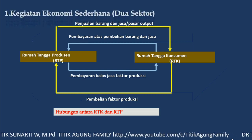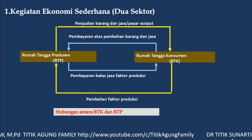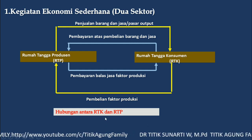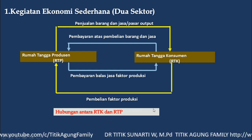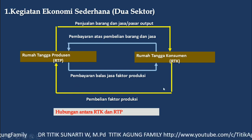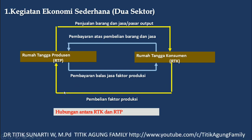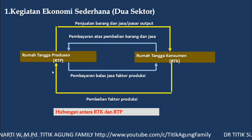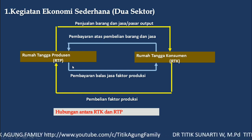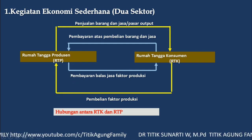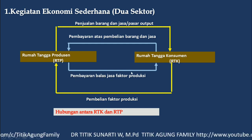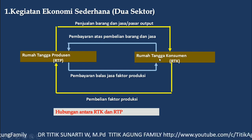Yang pertama, kegiatan ekonomi sederhana atau dua sektor, yaitu hubungan antara rumah tangga konsumen dan rumah tangga produsen. Rumah tangga konsumen menjual faktor produksi, sedangkan rumah tangga produsen membeli faktor produksi. Sebagai balas jasanya, rumah tangga produsen akan membayar kepada rumah tangga konsumen.